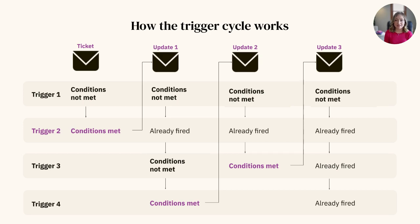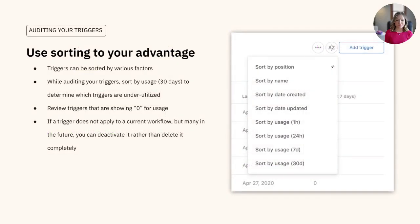Per Zendesk guidance, the general trigger order should be set, assign, and notify. This is why it is so important to routinely audit your business rules. A clean set of triggers is essential to the success of any Zendesk account. It's important to know that some of your business rules can have overlapping conditions, which can unintentionally send tickets astray. To ensure that your triggers are working cohesively rather than competitively, we recommend routinely auditing your account.